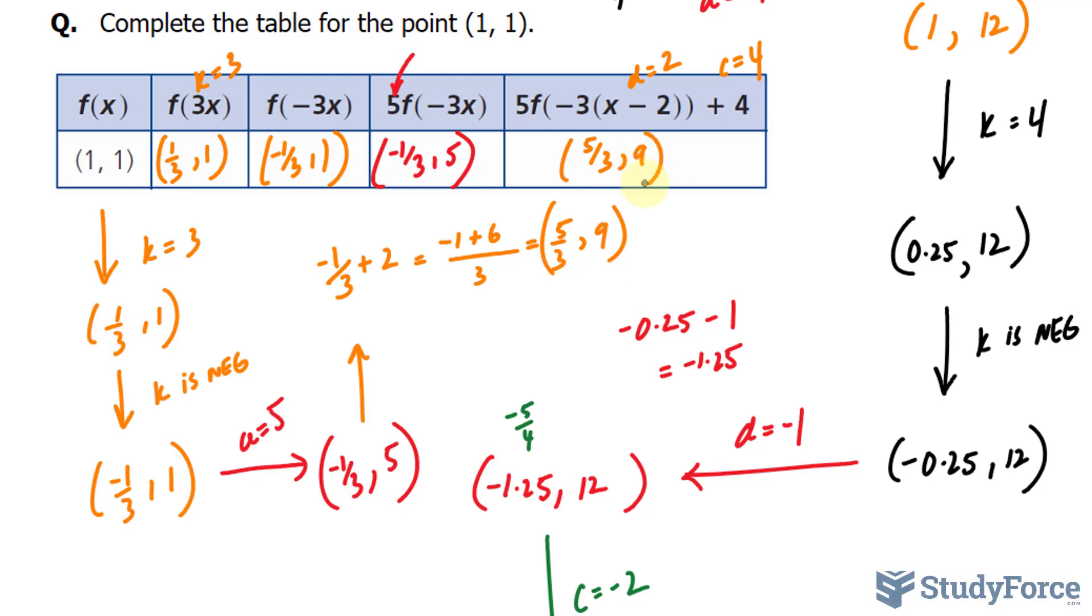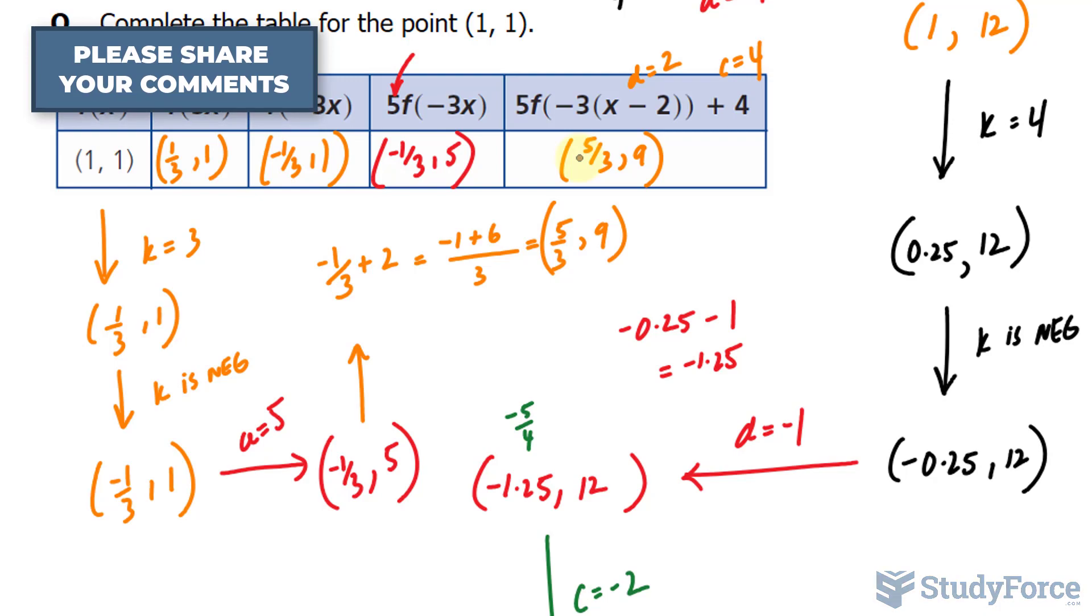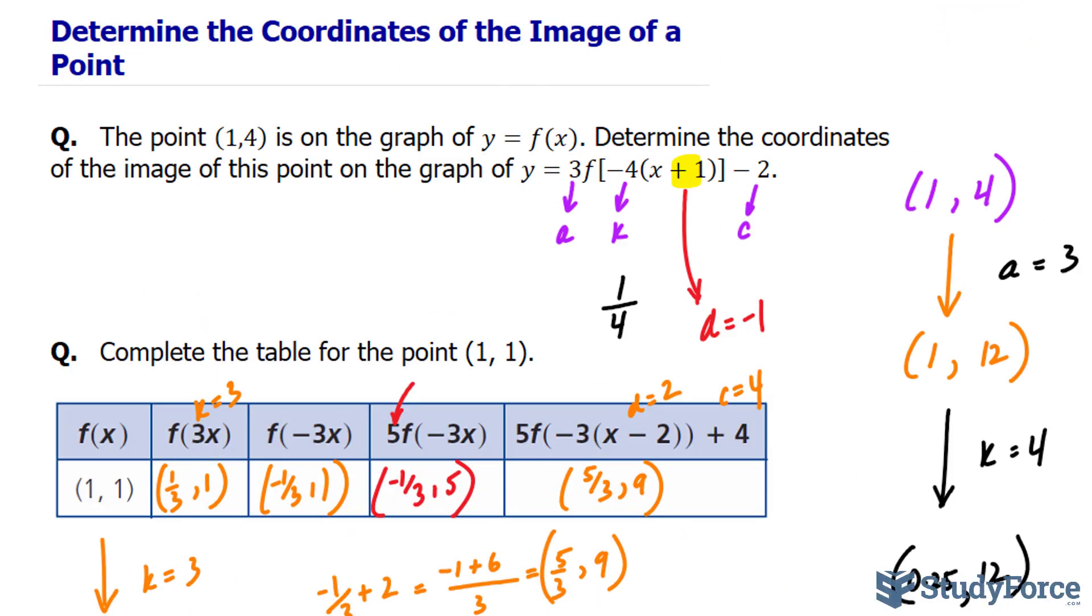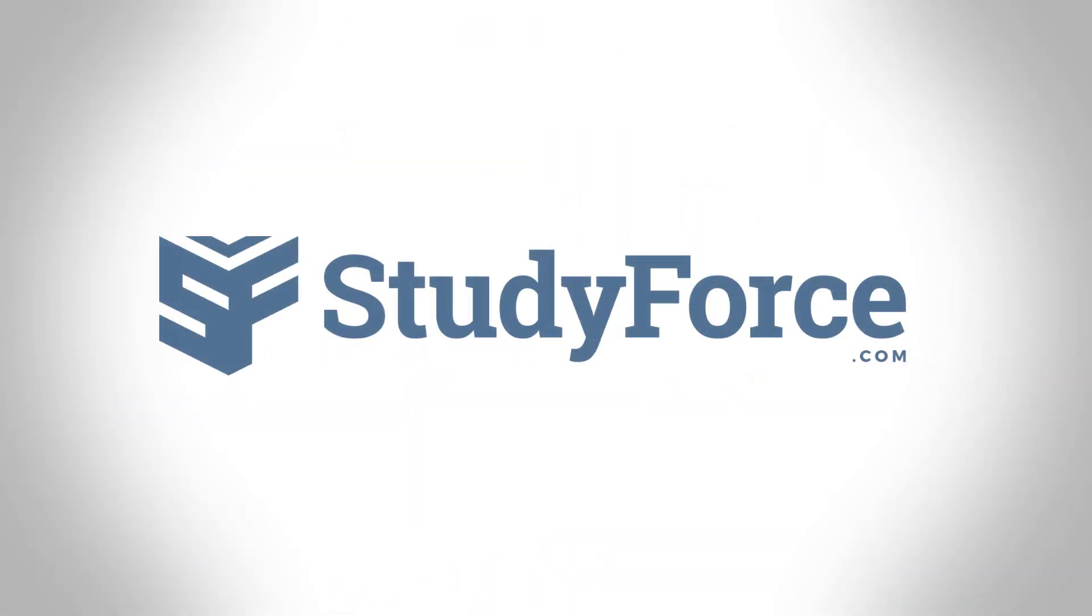And our y coordinate will be 5 plus 4, and that's 9. So this point ends up becoming 5 over 3 and 9 if we were to follow it through its journey being transformed. And so there you have it: two examples on how to determine the coordinates of the image of a point that's being transformed.